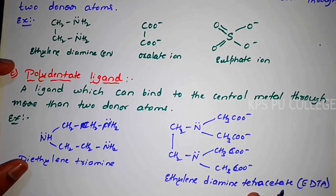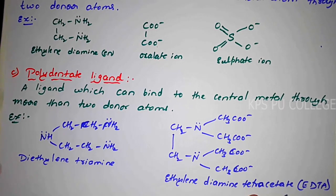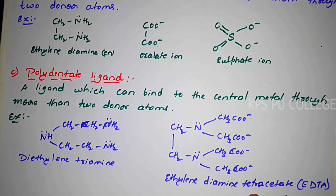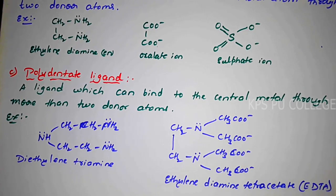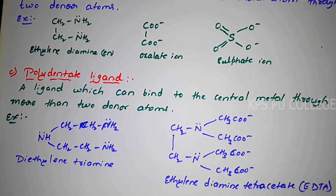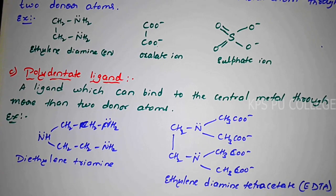This covers polydentate ligands and the types of ligands overall: monodentate, bidentate, and polydentate. Monodentate has one donor atom linked to the center, bidentate has two donor atoms, and polydentate has more than two donor atoms linked to the central metal atom.